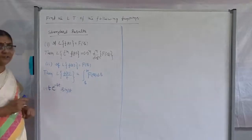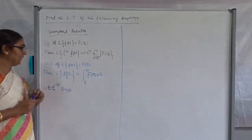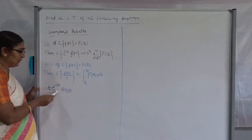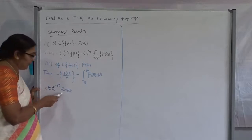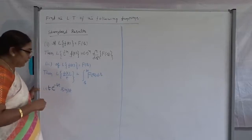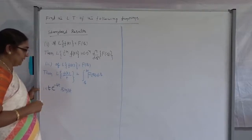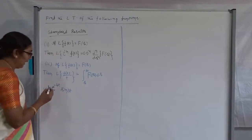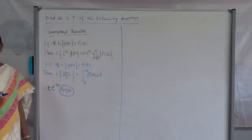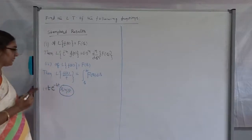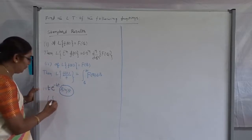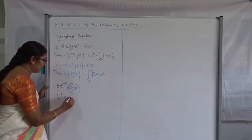The first function already written on the board is: t times e to the power of minus 4t times sine 3t. Here we have a trigonometric function, an exponential function, and also a polynomial. To find the Laplace Transform easily without any complicated work, we first take the function other than t and the exponential — that is the trigonometric function. So first, what is the Laplace Transform of sine 3t?